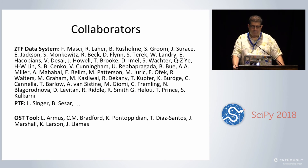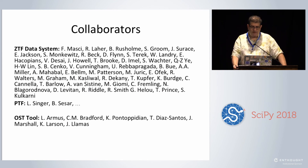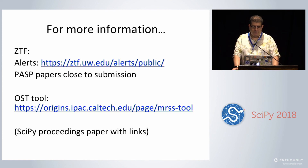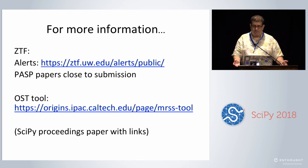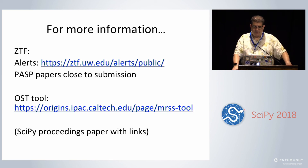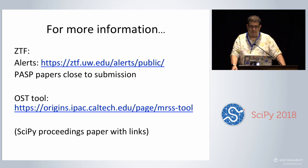I have a lot of collaborators on the ZTF and PTF projects. These are all the co-authors from the ZTF data system paper that will be out soon, and a number of collaborators for the OST tool. I'll leave you with some links for more information on ZTF. The public alerts are now available as tar files at the University of Washington. There will be brokers to help filter hundreds of thousands of alerts. There are PASP papers close to submission, and here's a link for the Origins Space Telescope tool along with a conference proceedings paper.